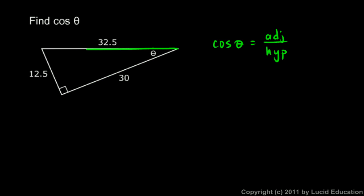Well, the 32.5 is the hypotenuse, so this is the adjacent side. The adjacent over the hypotenuse will be 30 over 32.5. You can work that out on the calculator, and rounded to three decimal places, that comes out to 0.923.